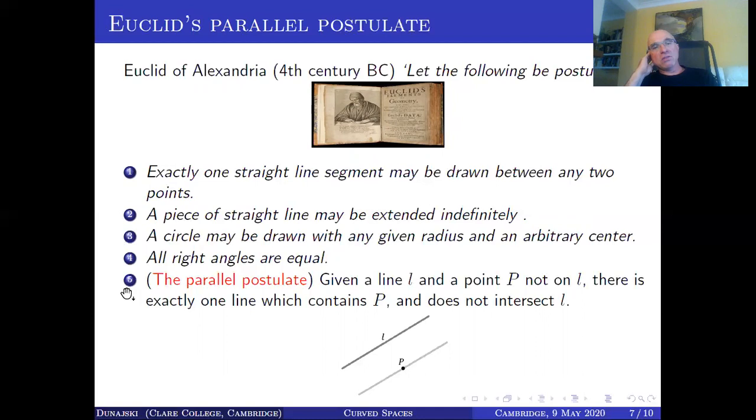They fork up intuitively obvious. First one, exactly one straight line segment might be drawn between any two points. Well, that's, you know, that's true. You'll see that when you experiment with lines on the plane. A piece of straight line might be extended indefinitely onto an infinite line. A circle might be drawn with any given radius and arbitrary centre. Indeed, there'll only be one sub-circle. All right angles are equal. That's a bit odd. What that one means is if you take two right angles and you keep one where it is, and the other one you translate and possibly rotate, then these two right angles will coincide. So, up to this congruence on the plane, all right angles are the same.